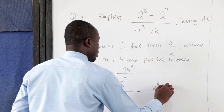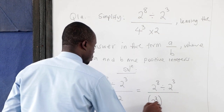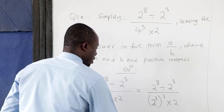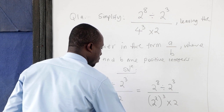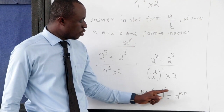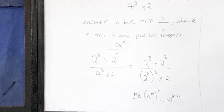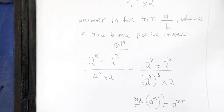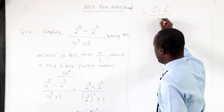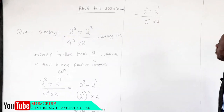In the denominator, we change 4 to 2 to the power 2, giving us 2 to the power 2, all raised to the power 3, times 2 to the power 1. Recall that when you have (a^m)^n, you multiply the exponents — so 2 times 3 gives 6. This gives us 2 to the power 8 divided by 2 to the power 3, all over 2 to the power 6 times 2 to the power 1.